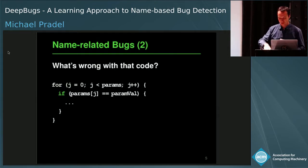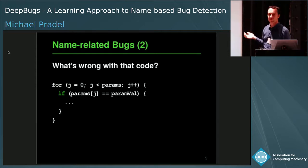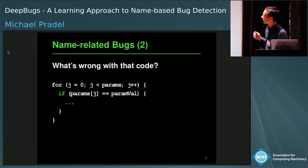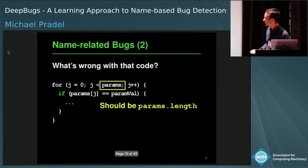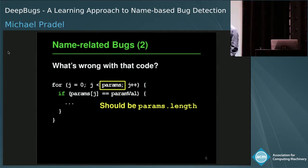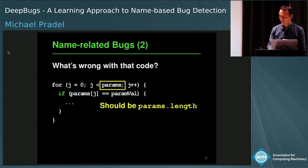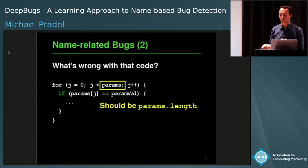As a second example, without really knowing what's going on and without type information, you can probably just by looking at the names have an idea what might be wrong. This loop tries to iterate over params, and j is the loop variable which is a number — params sounds like an array. So what the developer wanted to use is params.length. By just looking at the names, you can see that this is wrong because the name pointing to a number and the name typically referring to an array do not match up.